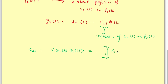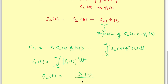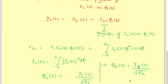Then we compute the energy of gamma_2(t), denoted E2. phi_2(t) is nothing but gamma_2(t) divided by the square root of E2. Similarly, in general, phi_k(t) = gamma_k(t) / sqrt(E_k).